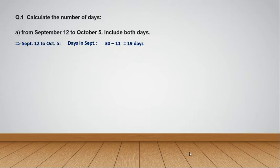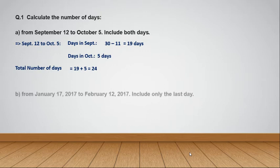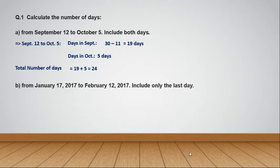Now let's go for the October month. In October we need to count till the 5th, so there are 5 days. Therefore the total number of days equals 19 plus 5, which is equal to 24. Let's take another example: from January 17, 2017 to February 12, 2017.